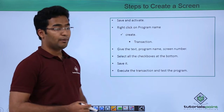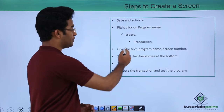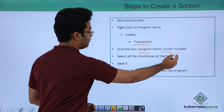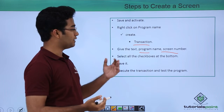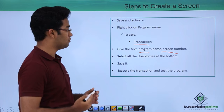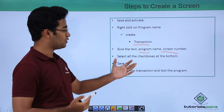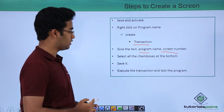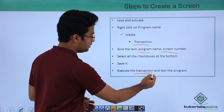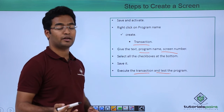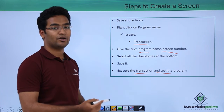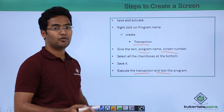Right-click on the program name and create a transaction. Give the text, program name and screen number. This way we have created a screen and assigned a transaction name. Select all the check boxes and save it. Now execute the transaction and test the program.